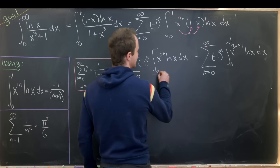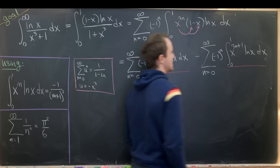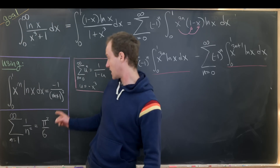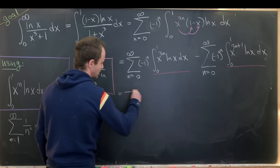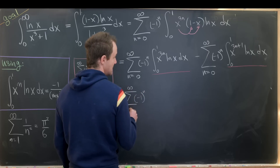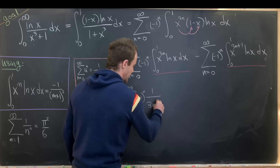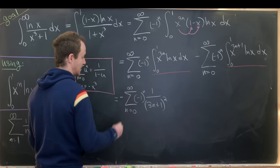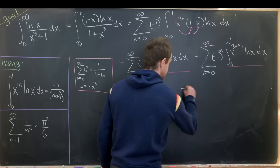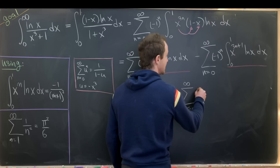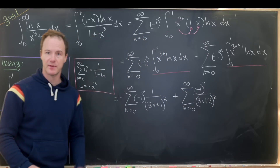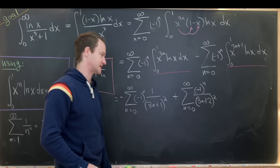We've got exactly the type of integral we derived at the beginning. Applying the formula, the first sum becomes minus the sum from n equals 0 to infinity of minus 1 to the n over 3n plus 1 squared — with the minus sign from the formula brought out front. The second sum becomes plus the sum from n equals 0 to infinity of minus 1 to the n over 3n plus 2 squared, where the two minus signs cancel.